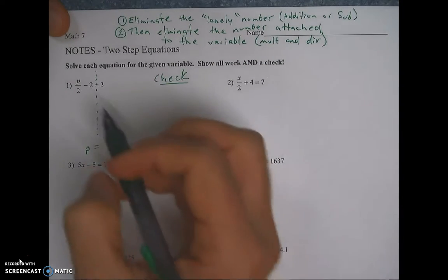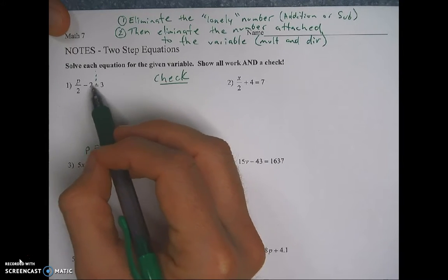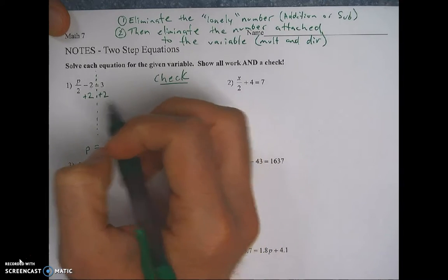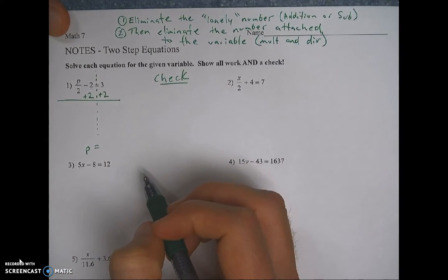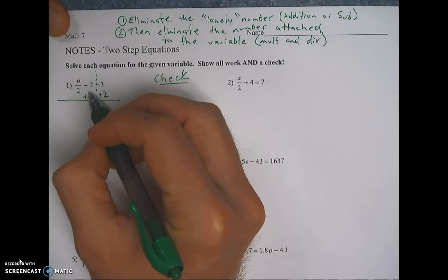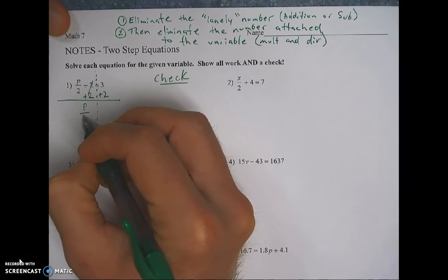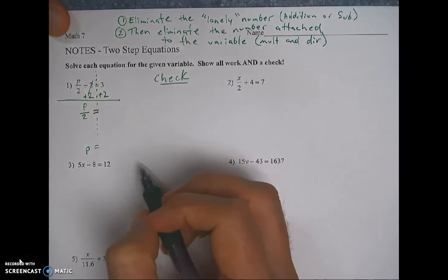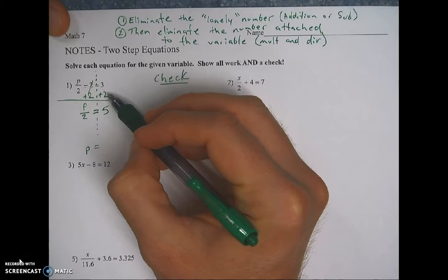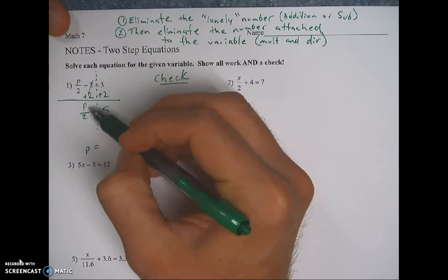All right, so for number one, the lonely number is the minus 2. Well, just like we've been doing, to eliminate a minus 2, you're going to do the opposite. So we're going to plus 2. And as always, you have to do it on both sides, and you need to show it on both sides. When we're doing our addition and subtraction, we have to put that big equals line across to show our step. And we're going to go straight down. Now the negative 2, or the minus 2, and plus 2 cancel, leaving me p over 2. So I still have a p over 2. Bring your equal sign down, and then add on the other side, 3 plus 2 is 5. So I've added 2 to this side to get 5. I added 2 on this side to eliminate this. That was why I did it in the first place.